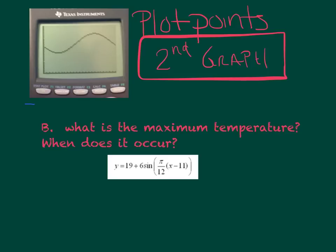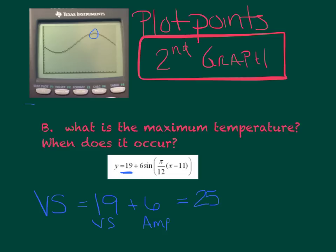Question B: what is the maximum temperature, and when does it occur? Just looking at my graph, it's that point right at the top. There are two ways to get it. Based off the equation, we had a vertical shift of 19, and we know we have to add our amplitude of 6 to get the max. So the maximum temperature is 25 degrees. Now I need to find exactly when it occurs — and that's calculator work. Grab that calculator.